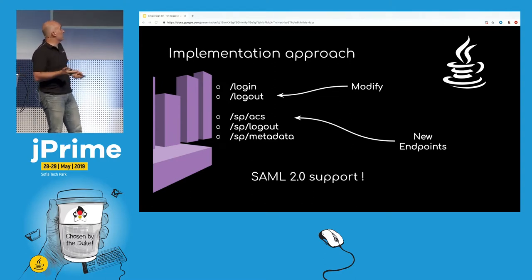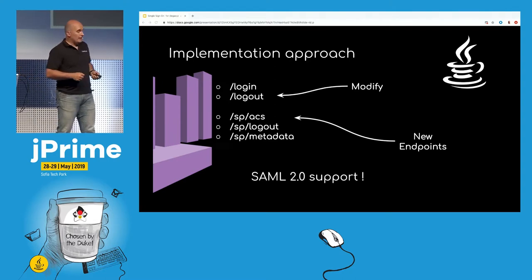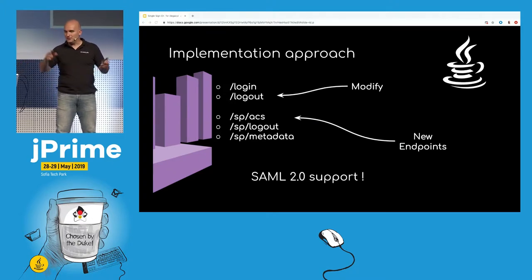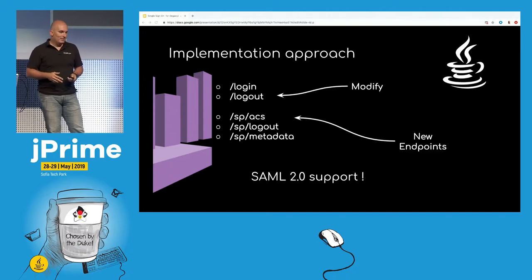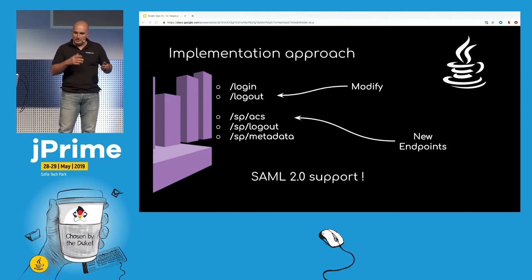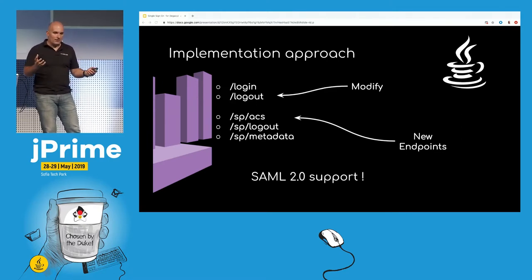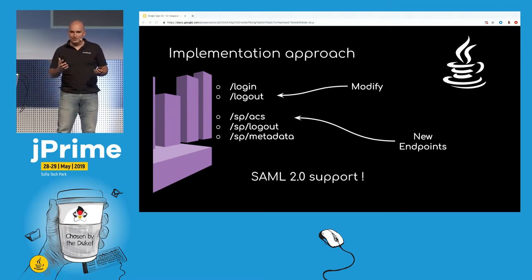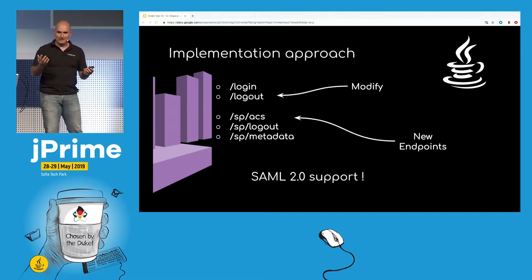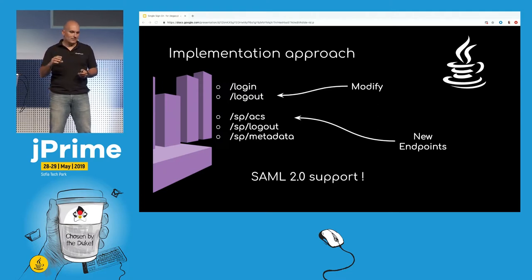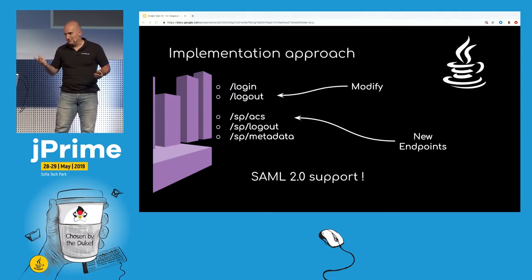The last — and optional — endpoint is the metadata. It's a SAML description of the previous endpoints and the service provider's public certificate, and so on. The identity provider also has this kind of metadata. Exchanging the metadata between the service provider and the identity provider is what establishes the trusted relationship.